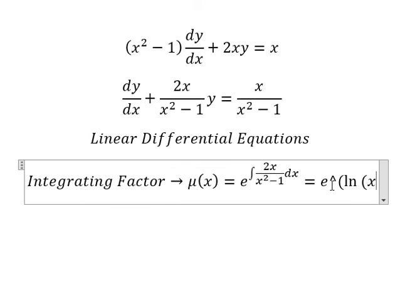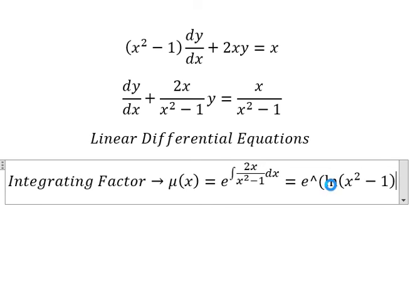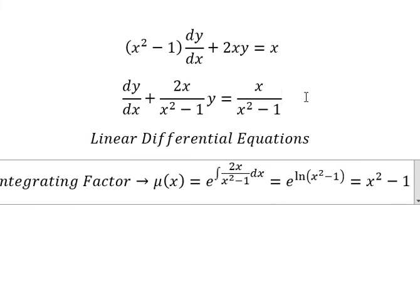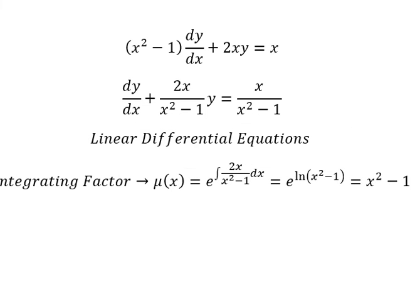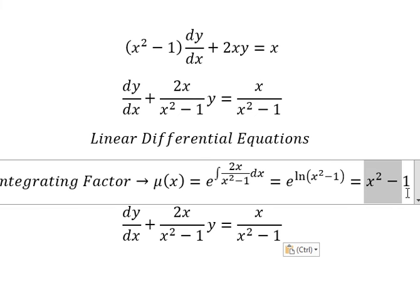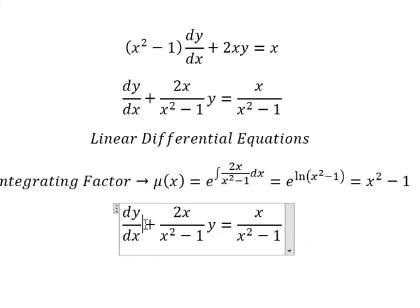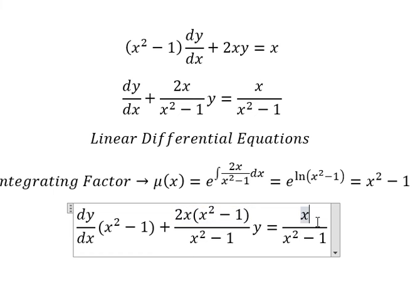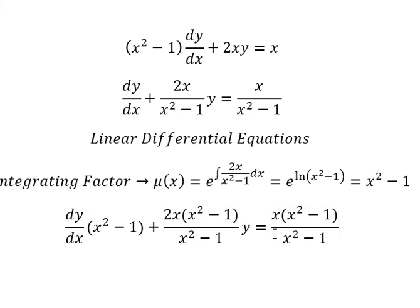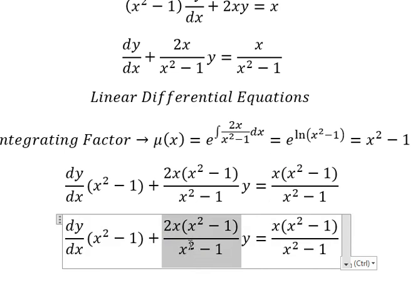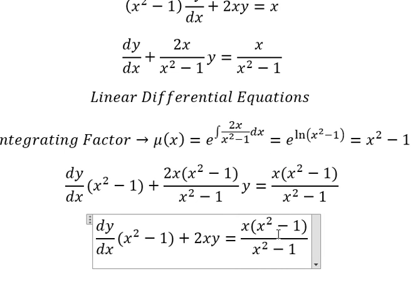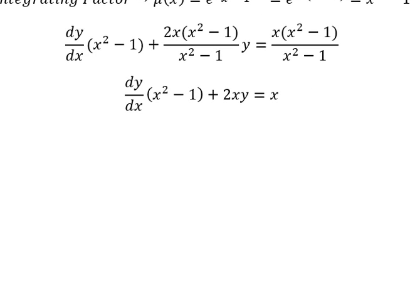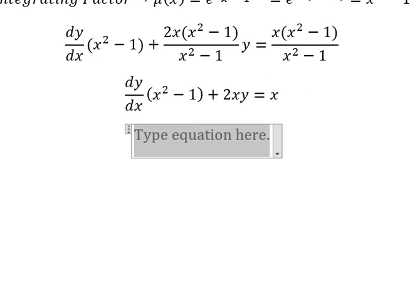And we have ln of x squared minus one, and we can simplify like this. That means we multiply both sides by this integrating factor. Next we need to integrate both sides.